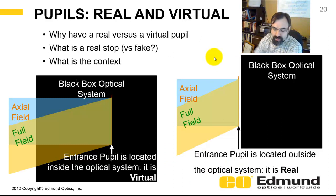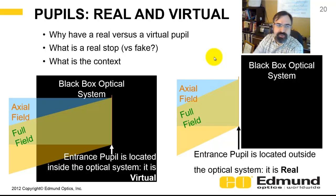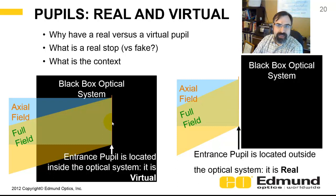Pupils, like images, are going to have real and virtual forms. The opposite of a real pupil isn't a fake — it's a virtual. In the cases we've been looking at with the double Gauss, you've got a virtual entrance pupil that is inside the optical system. As opposed to a real pupil, which is located outside. In one case you can't physically touch the pupil; in the real case you can — you can put an object there.